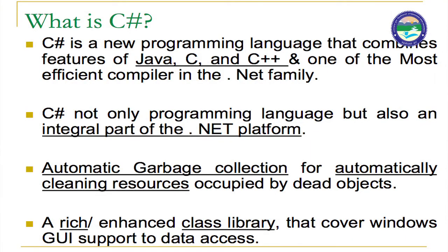C# is a new programming language that combines features of Java, C, and C++. It is sharper than C and C++. C# is not only a programming language but also an integral part of the .NET family and a very important compiler of the .NET family. Many other features are also associated with .NET Framework.